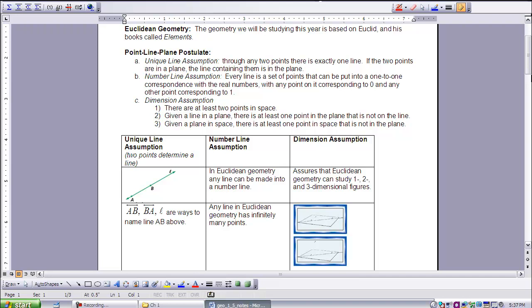The second, part B, the number line assumption. Every line is a set of points that can be put into a one-to-one correspondence with the real numbers, with any point on it corresponding to zero and any other point corresponding to one.